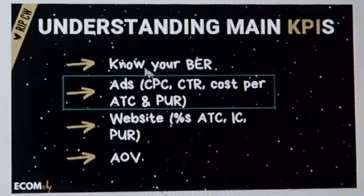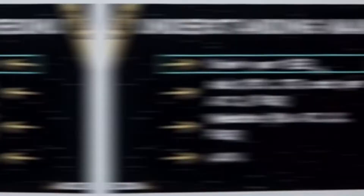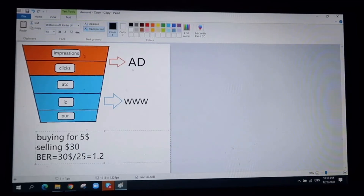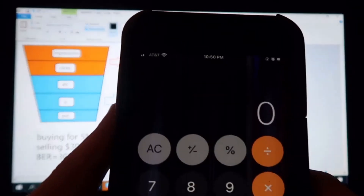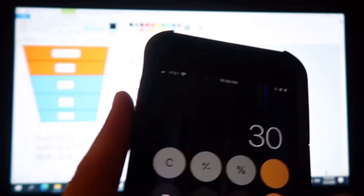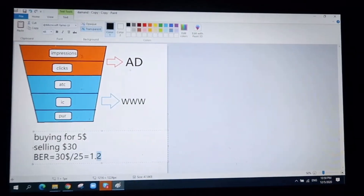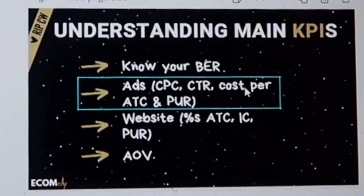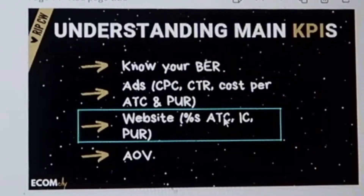Understand the main KPIs. You have to know your break-even point. If you're buying something for $5 on AliExpress and selling for $30, the break-even point is the selling price divided by the margin. $30 divided by 25 equals 1.2 — that's your break-even. Also track CPC, average CTR, add-to-cart, cost per purchase, website add-to-cart percentage, initiate checkout percentage, purchase percentage, and AOV.